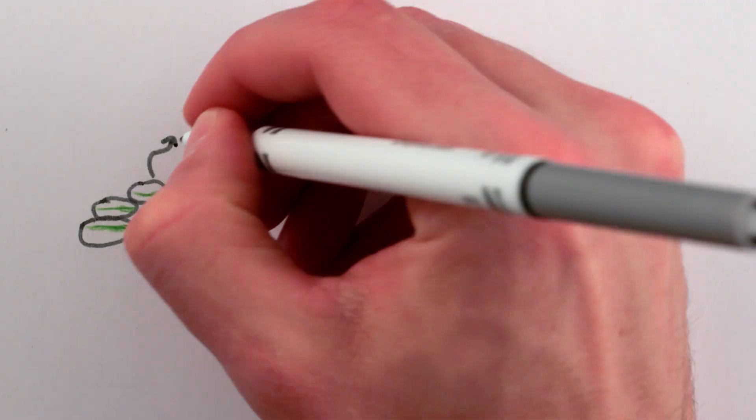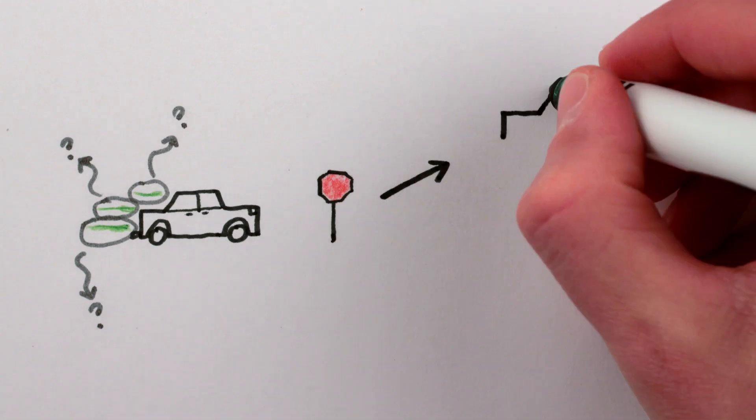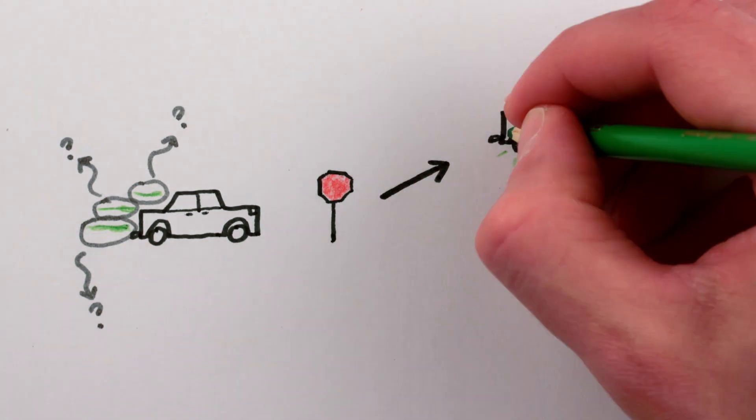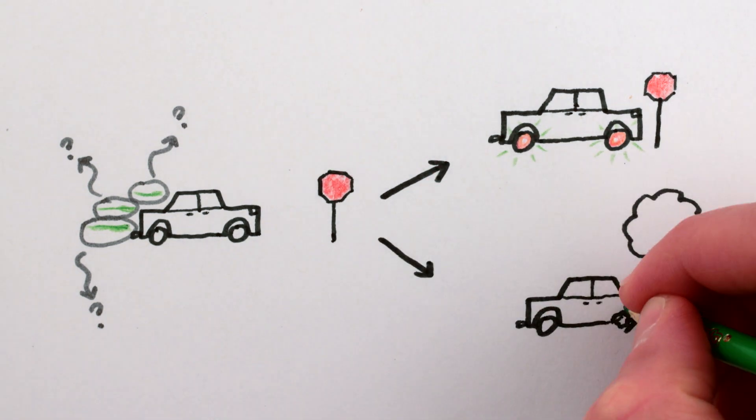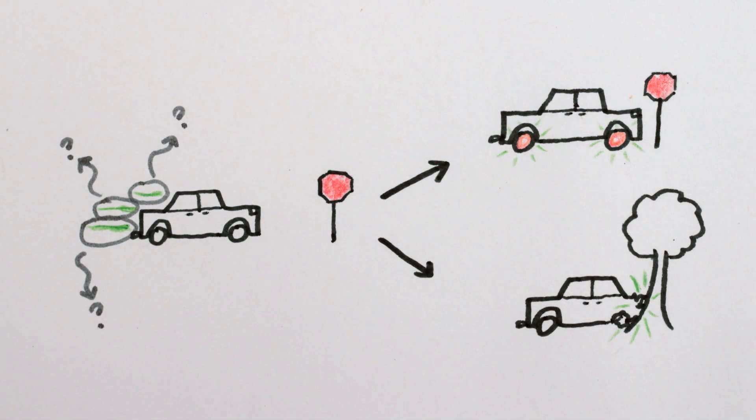And in order for the car to stop, all that energy has to go somewhere. If the brakes do the stopping, they dissipate the energy by heating up. Or, in the case of a collision, energy is dissipated by the bending and crumpling of metal in the outer areas of the car.